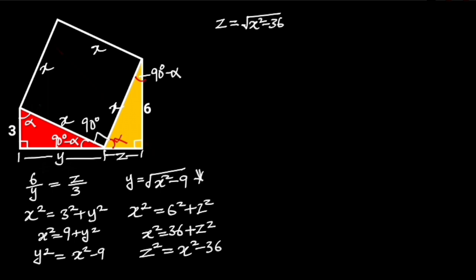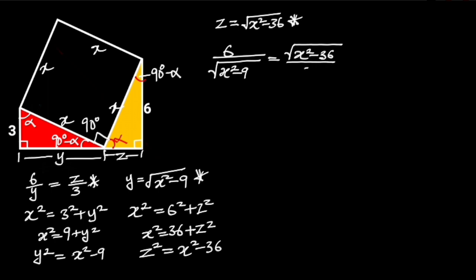Now we know the values of y and z. Let's substitute these into the proportionality equation. Doing so gives us: 6 over the square root of x squared minus 36, divided by 3, equals the square root of x squared minus 9 times x squared minus 36.